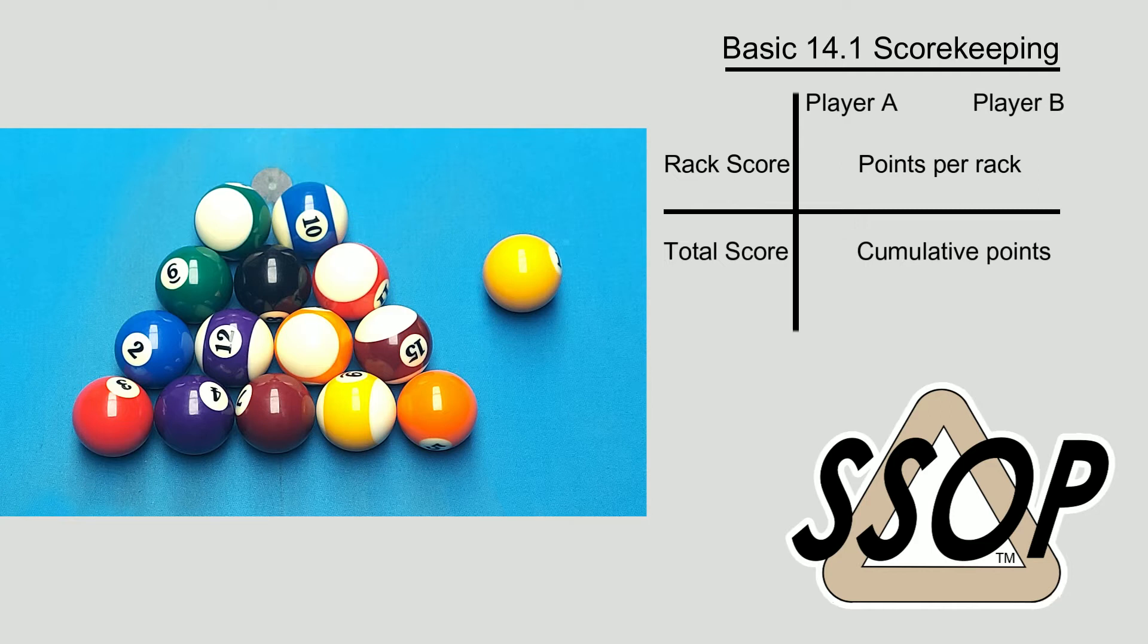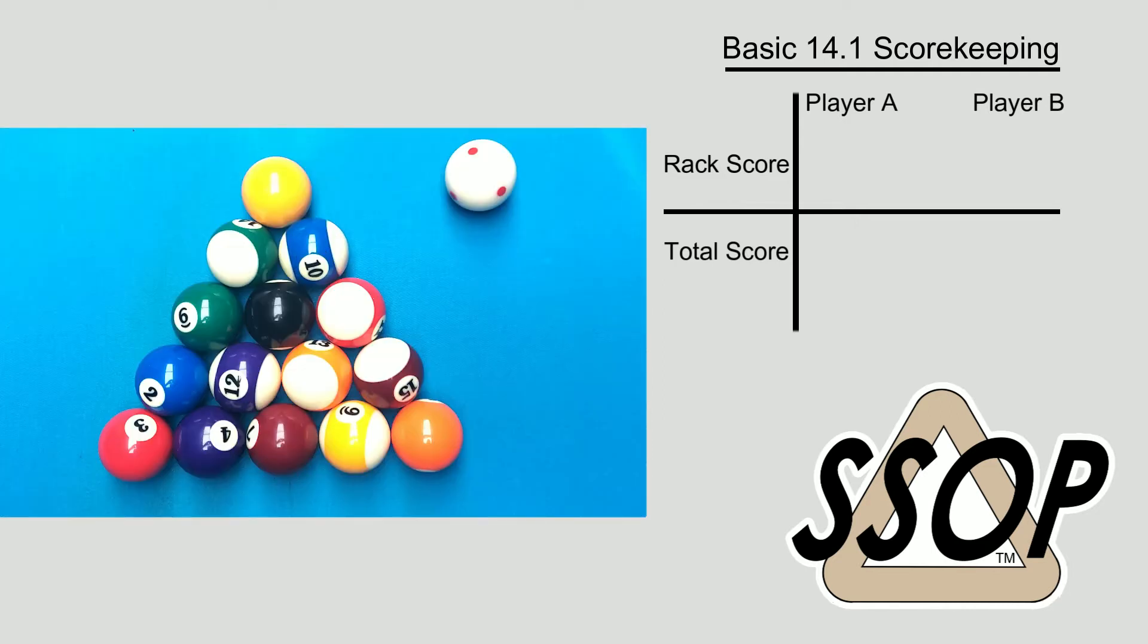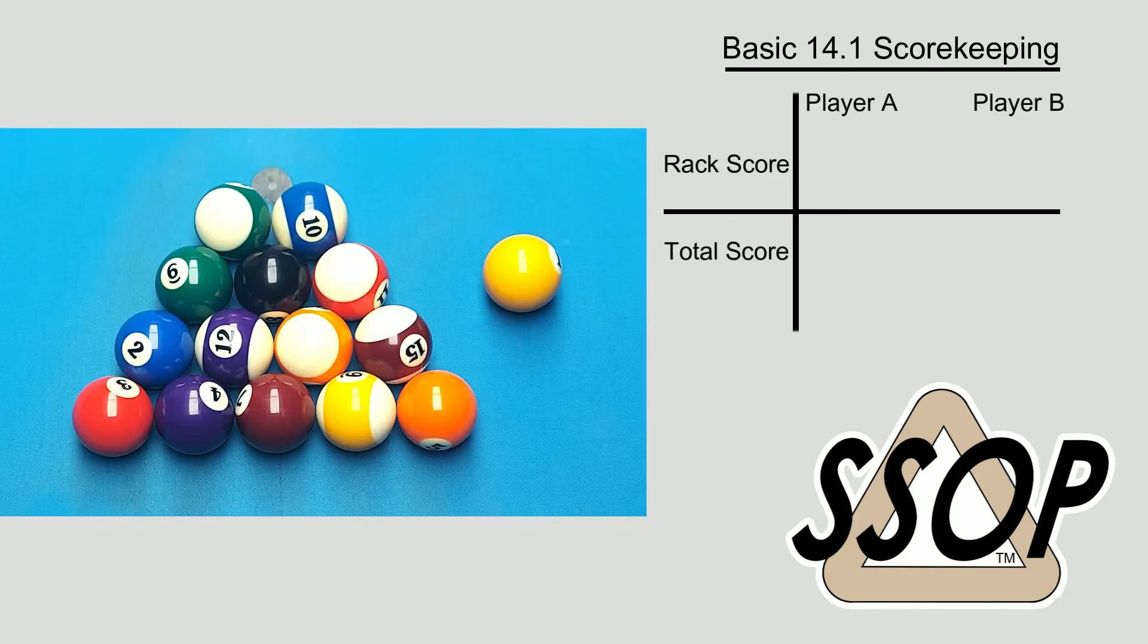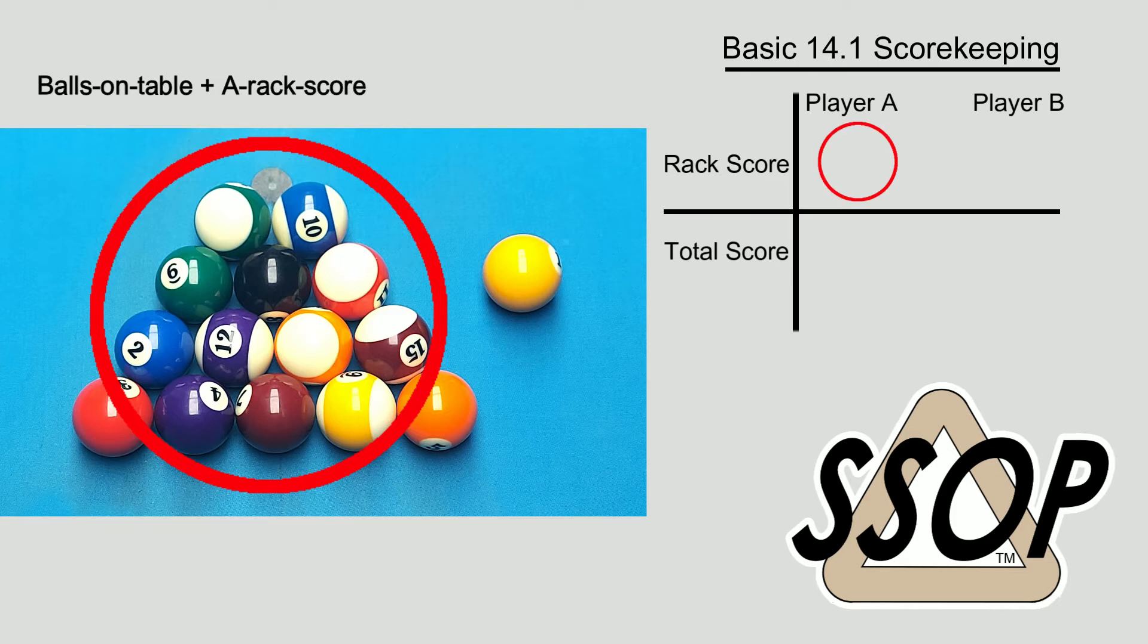Let's look at a quick example with the pool balls only before learning to use the score sheet. Every game of straight pool starts with a rack of 15 balls, and every successive rack starts with 15 balls as well: 14 rack balls and a break ball. During any rack, the total number of balls on the table and each player's rack score should be 15. If it's not, you've miscounted.